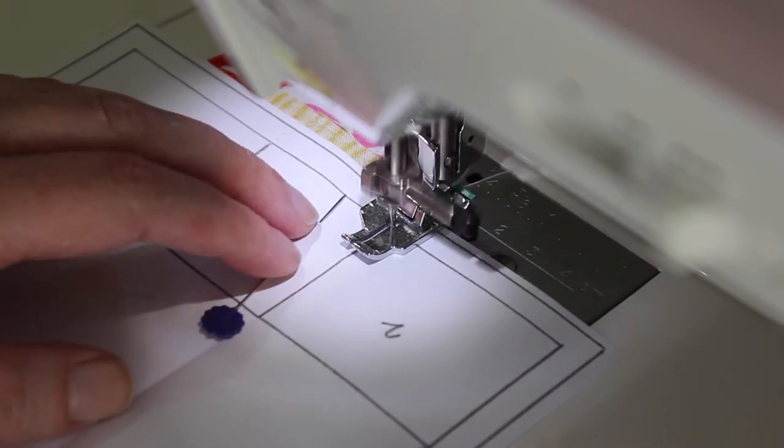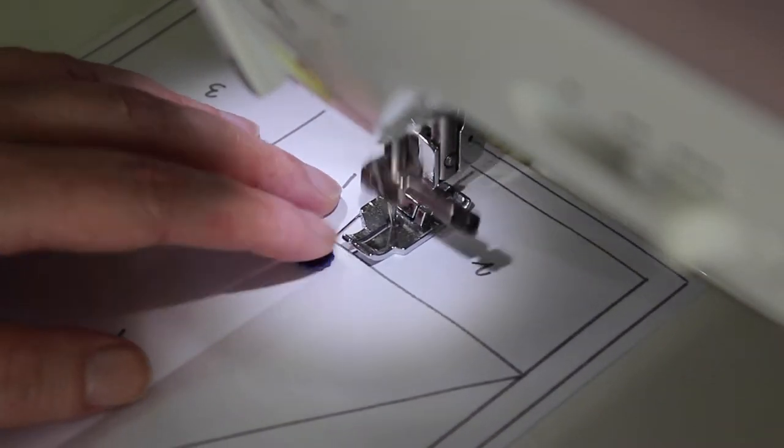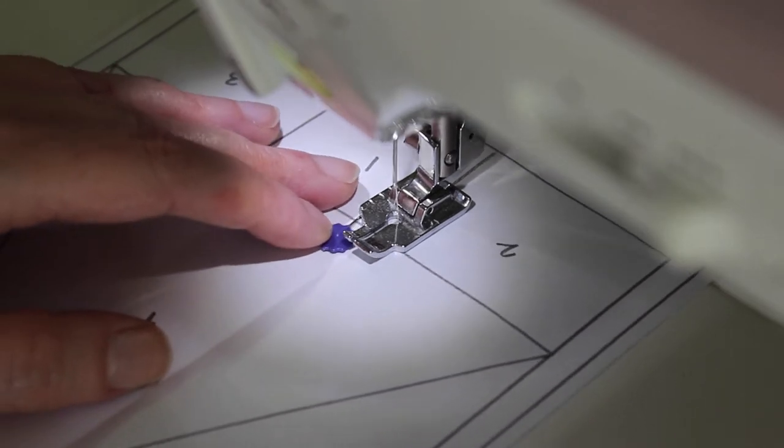At the machine, confidently sew on top of the line between sections one and two, and then stop once you've reached the line to section four.